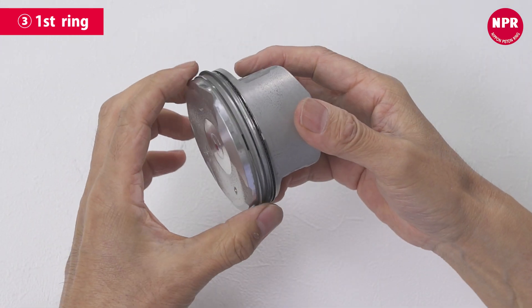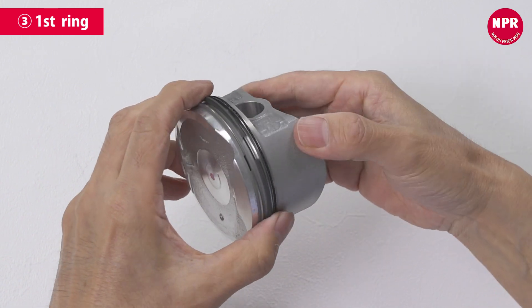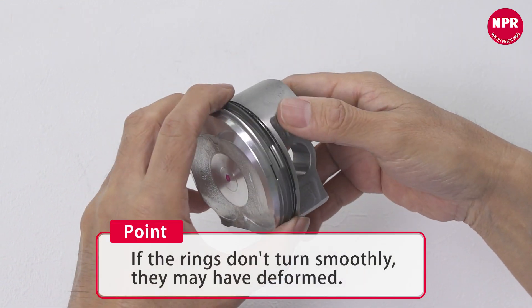After installing all piston rings, check if they turn smoothly or not. If the rings don't turn smoothly, they may have deformed.